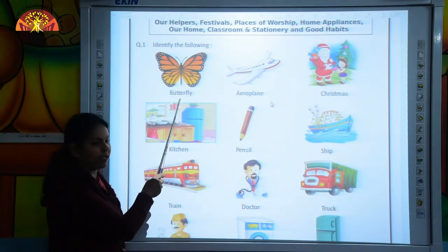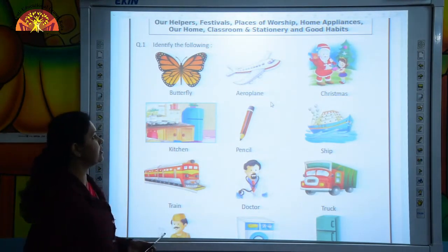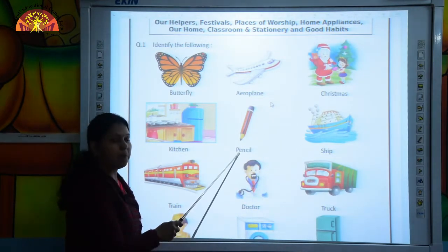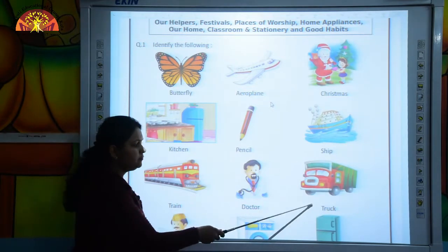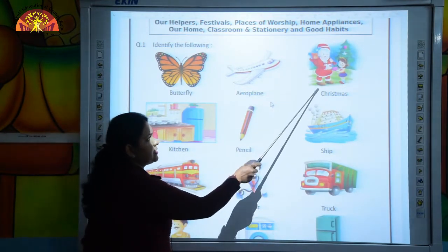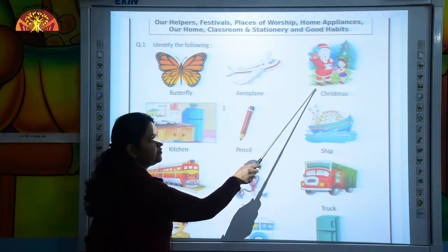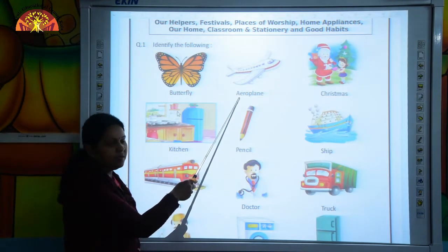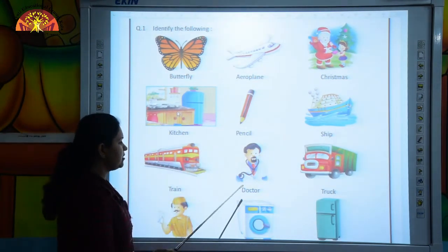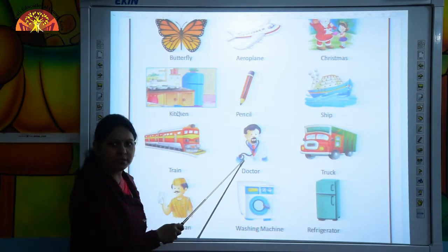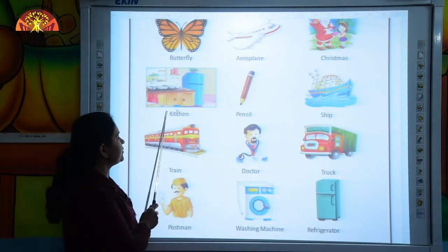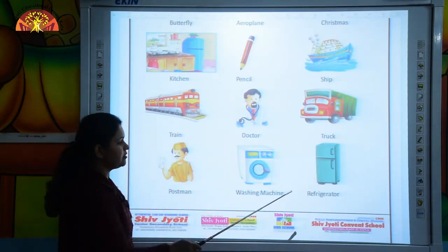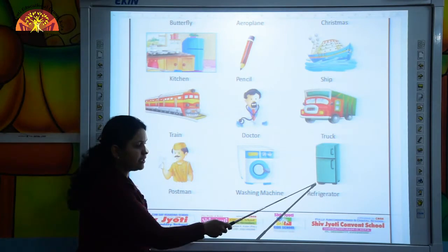This is a butterfly. This is a ship. This is a pencil. This is a truck and this is the festival of Christmas. This is an aeroplane and he is a doctor and this is the picture of a kitchen.